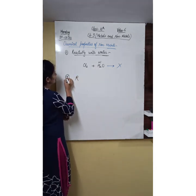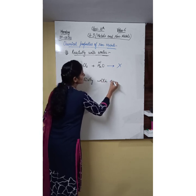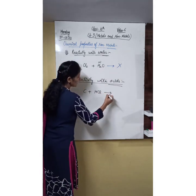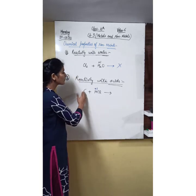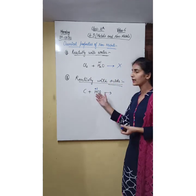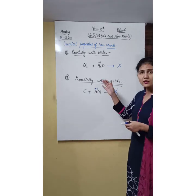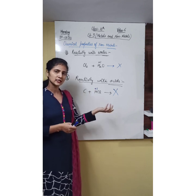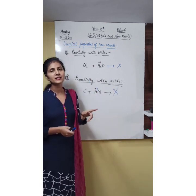Our next reaction is the reactivity of non-metals with acids. In acids, hydrogen is present in a +1 oxidation state, which means non-metals would have to give electrons to hydrogen for the reaction to take place — and this is not possible. Therefore, non-metals do not react with acids. In contrast, metals can react with both water and acids.